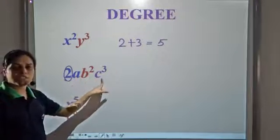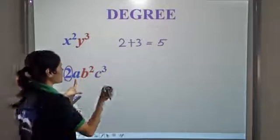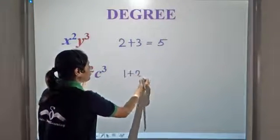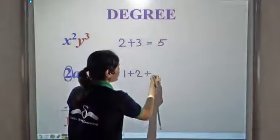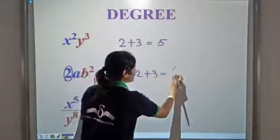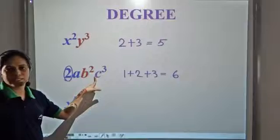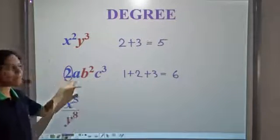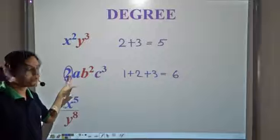Power of a is 1. Power of b is 2. And power of c is 3. So 1 plus 2 plus 3 gives us 6. So the power of this term is 6. We ignore the power of the constant term which is 2 here.